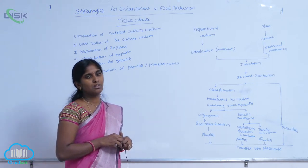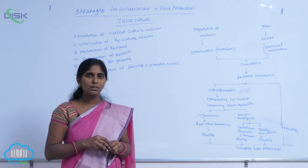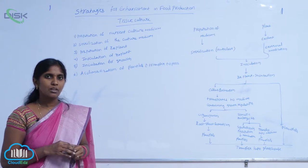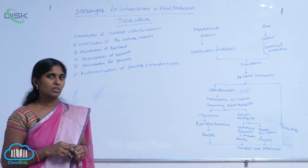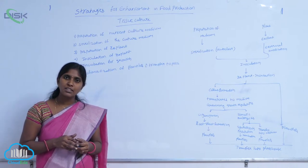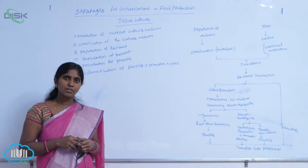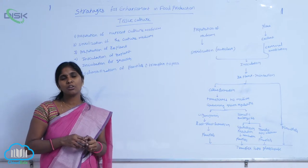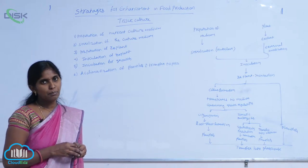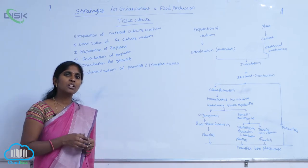First and foremost is preparation of the culture medium. Why is nutrient medium required? Naturally, plants synthesize their own food — they trap sunlight, absorb minerals and water from soil, and absorb carbon dioxide from the atmosphere, then use all those components for photosynthesis. But during in vitro cultivation, the plants do not have any soil or sunlight, yet they require nutrients for their growth.